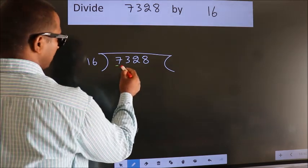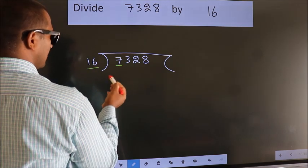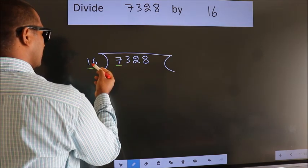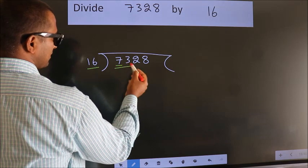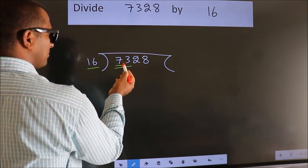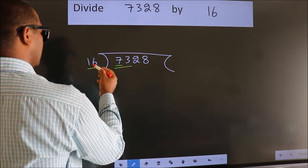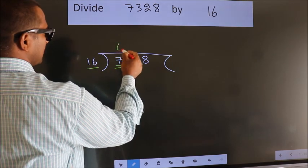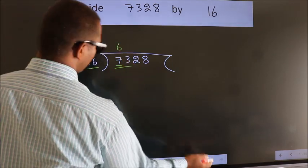Here we have 7. Here 16. 7 smaller than 16. So we should take two numbers, 73. A number close to 73 in the 16 table is 16 fours, 64.